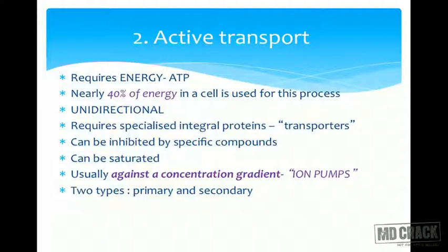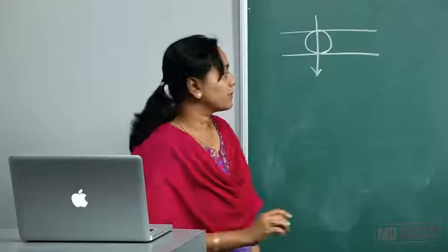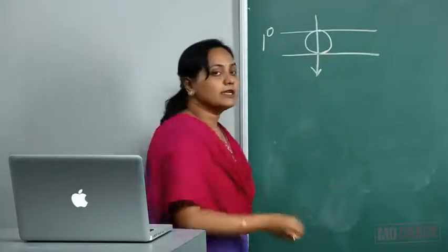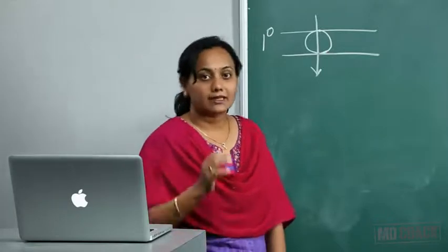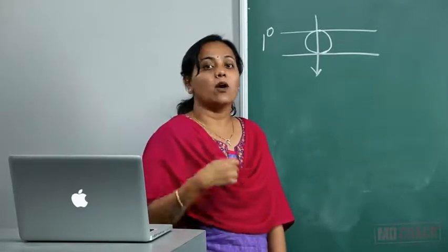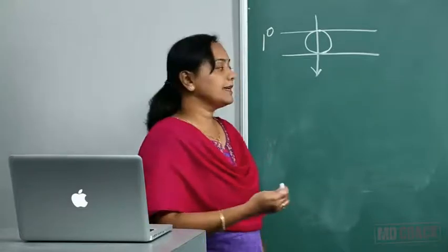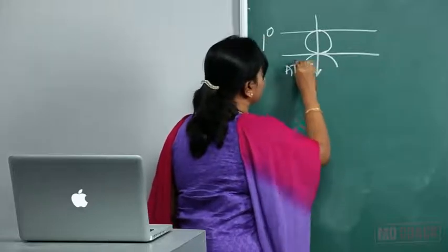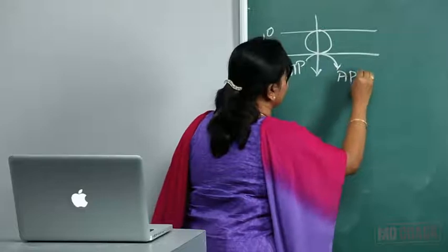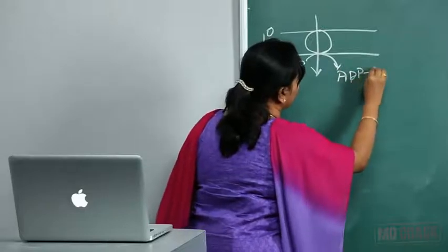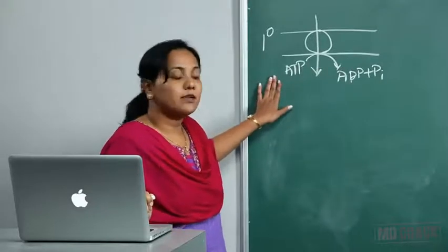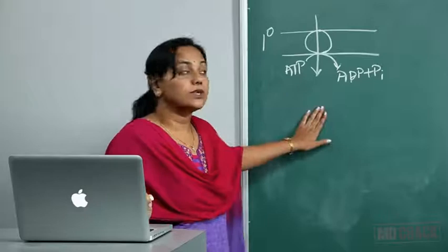In primary active transporters, the carrier itself is an ATPase — meaning it is an enzyme with the capacity to hydrolyze ATP and drive the transport forward. This type of transport occurs against a concentration gradient: concentration may be low on one side but transport still takes place, requiring ATP and energy.